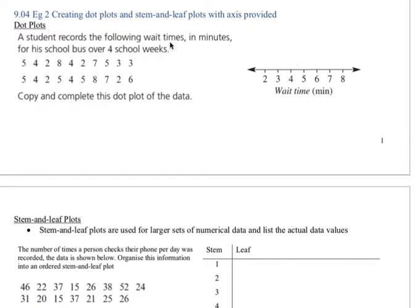A student records the following wait times in minutes for his school bus over four school weeks. So we've got a five, four, two, etc., all the way through here. Copy and complete this dot plot of the data.